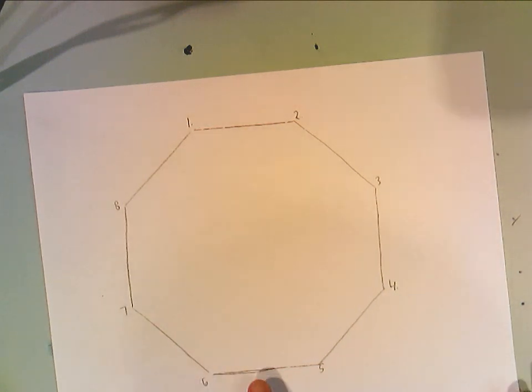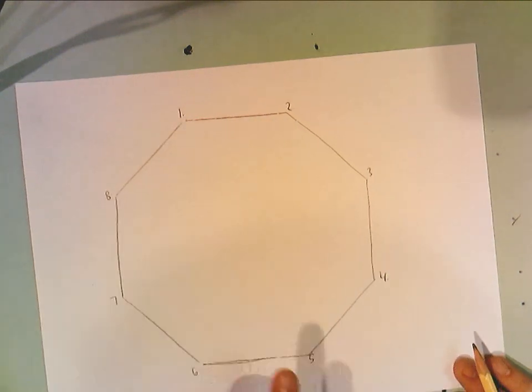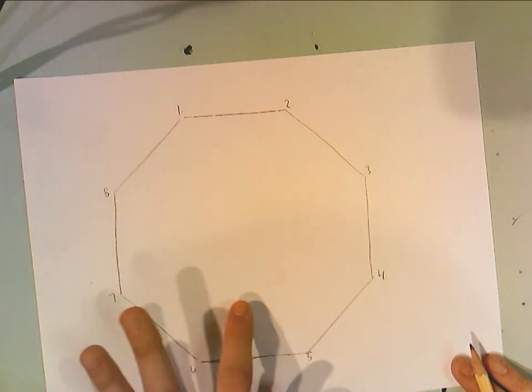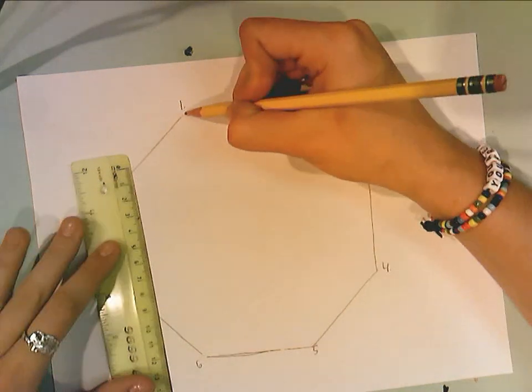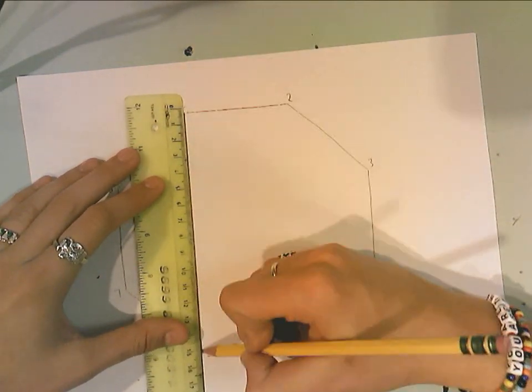If that was too tricky for you, draw your shapes and number all of your points of intersection, and then honestly, just start drawing lines.